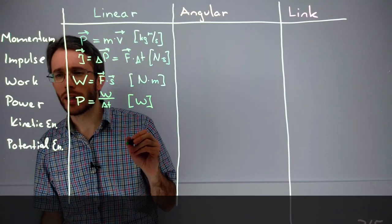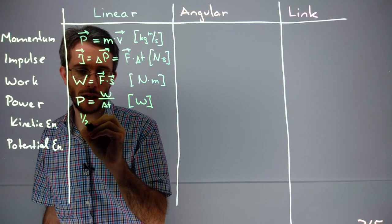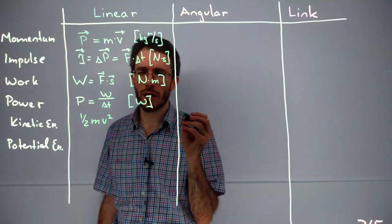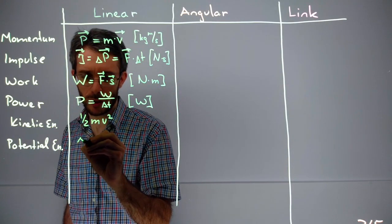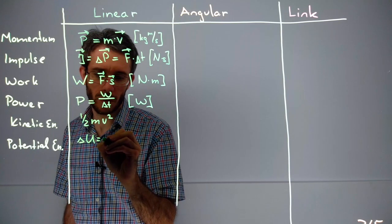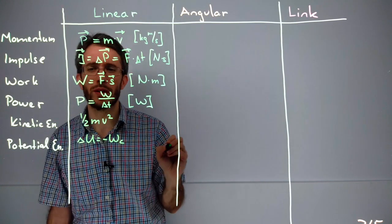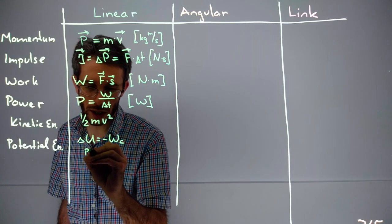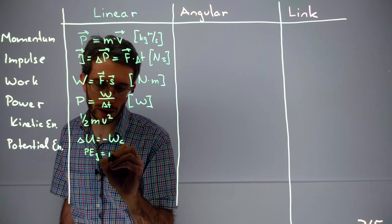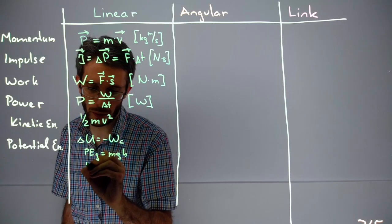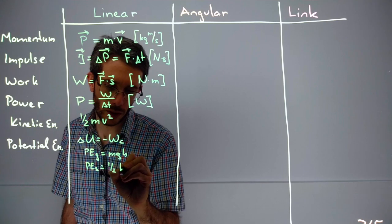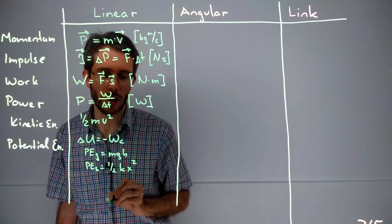And kinetic energy, we had one-half mv squared. And for potential energy, we have that in general, the change in potential energy is minus the work done by a conservative force. And then we have potential energy of gravity, which is mgh, and we have potential energy of a spring, which is one-half spring constant times extension of the spring squared.